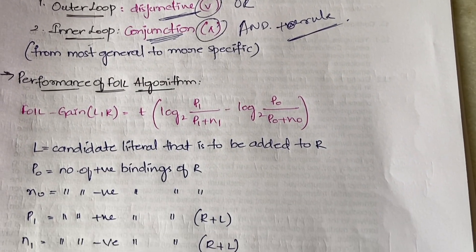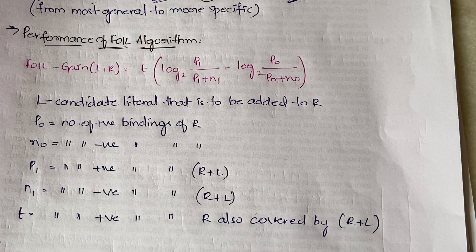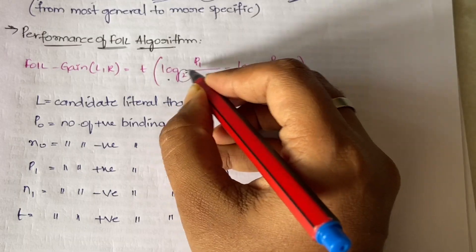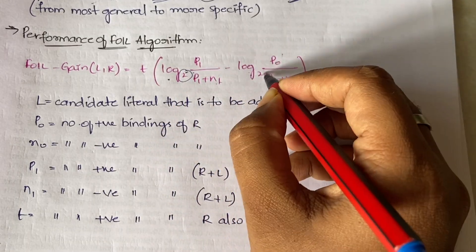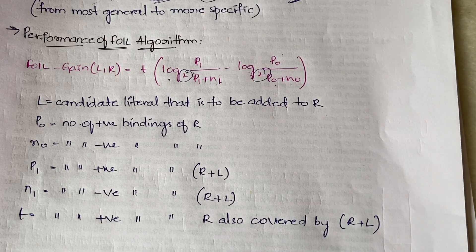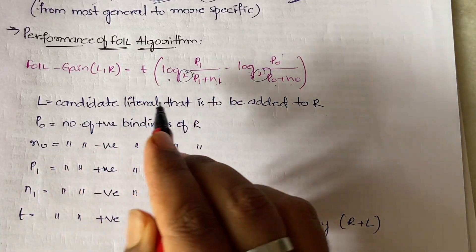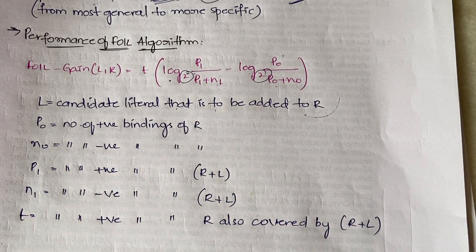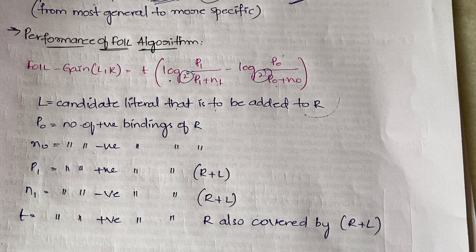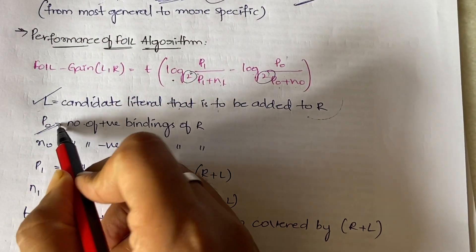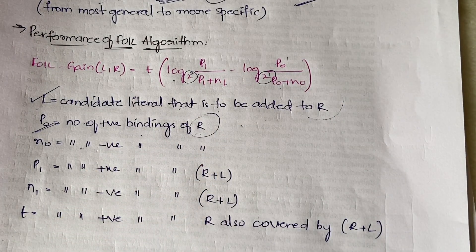The performance of FOIL is measured using FOIL Gain: Foil_Gain(L, R) = t × [log₂(p1 / (p1+n1)) − log₂(p0 / (p0+n0))]. Here, L is the candidate literal to be added to R (the rule set). p0 is the number of positive bindings of R before adding L, and n0 is the number of negative bindings of R before adding L.